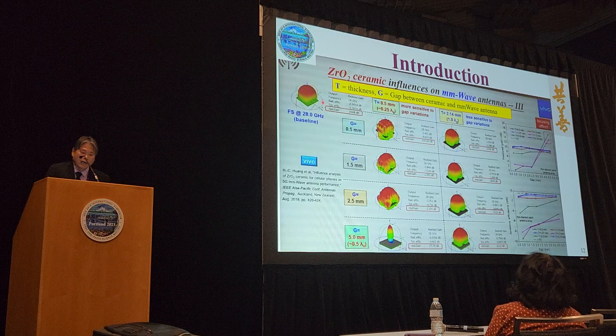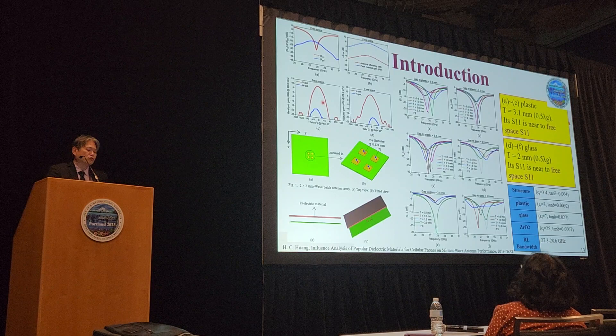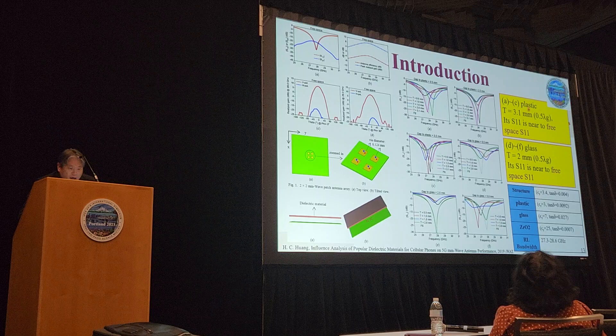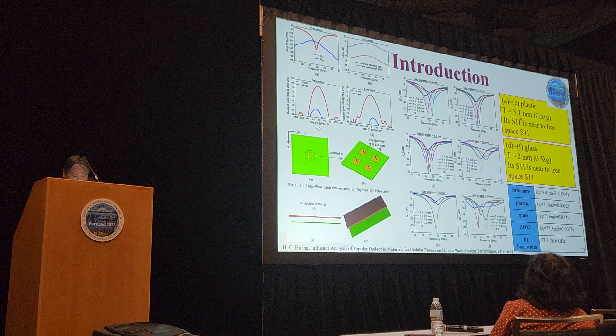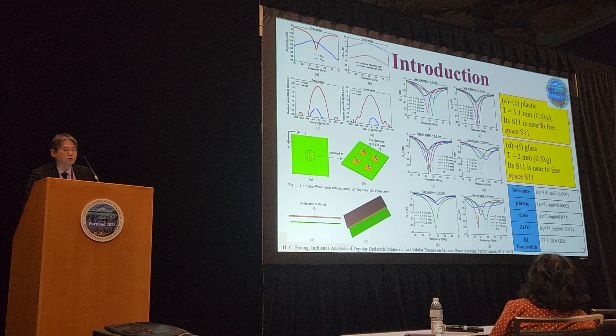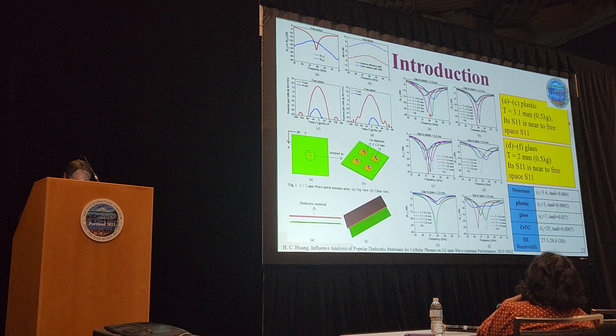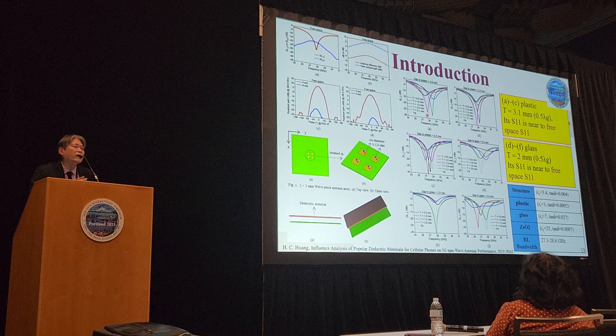We looked further into Dr. Huang's work and found that he also tried plastic and glass. For plastic, with epsilon r of approximately 3, at a thickness of 3.1 mm it is equivalent to 0.5 lambda g. The gray curve is free space and the pink color one is at 3.1 mm. You can see from the return loss that it is back to exactly the same as in free space when you set the thickness close to 0.5 lambda g.